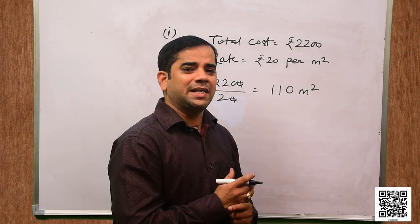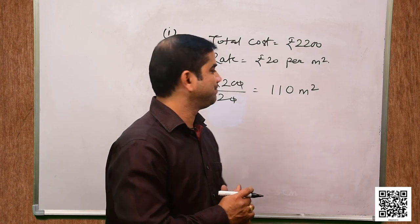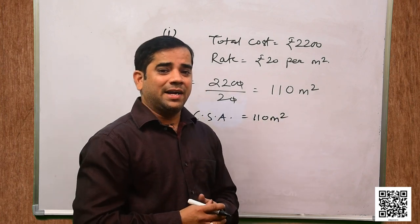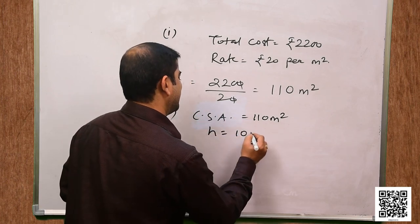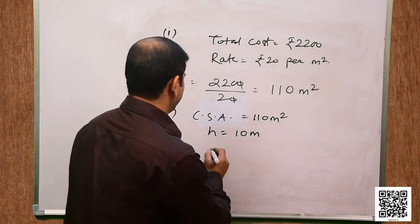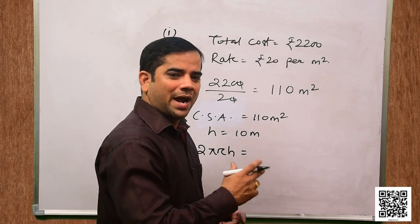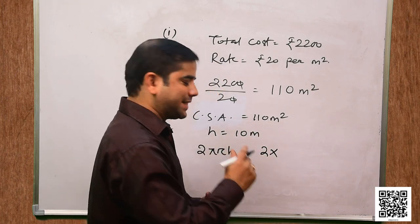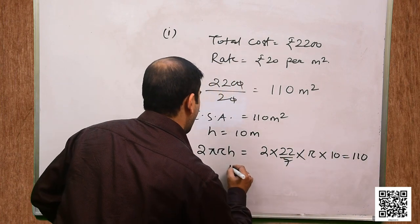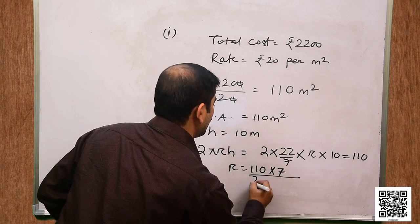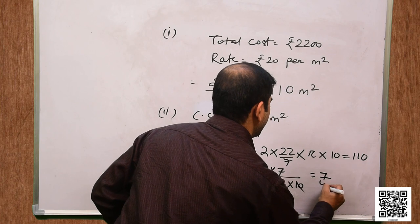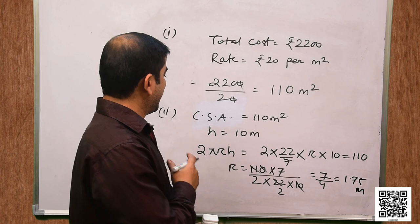Let us find the radius of the base. Curved surface area = 110 m², height = 10 m. Formula: 2πrh = 110. So 2 × (22/7) × r × 10 = 110, giving r = (110 × 7) / (2 × 22 × 10) = 7/4 = 1.75 meter. This is the radius of the base.